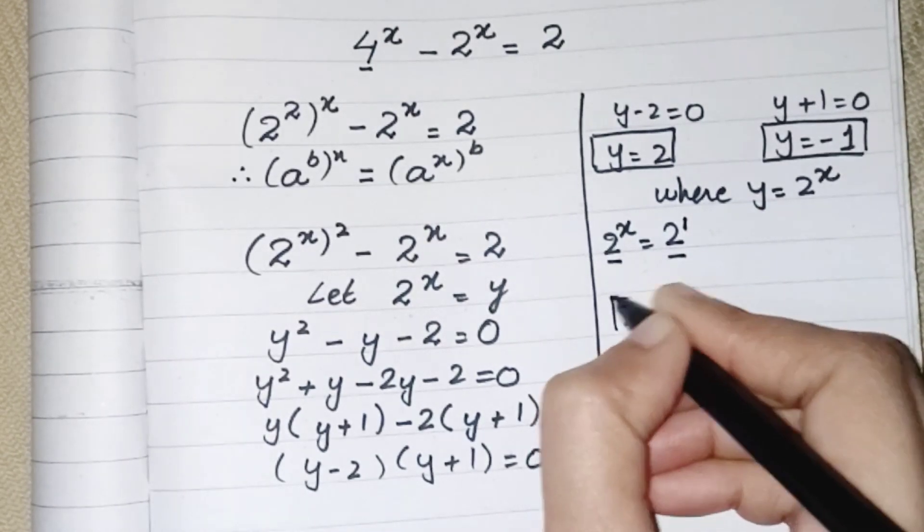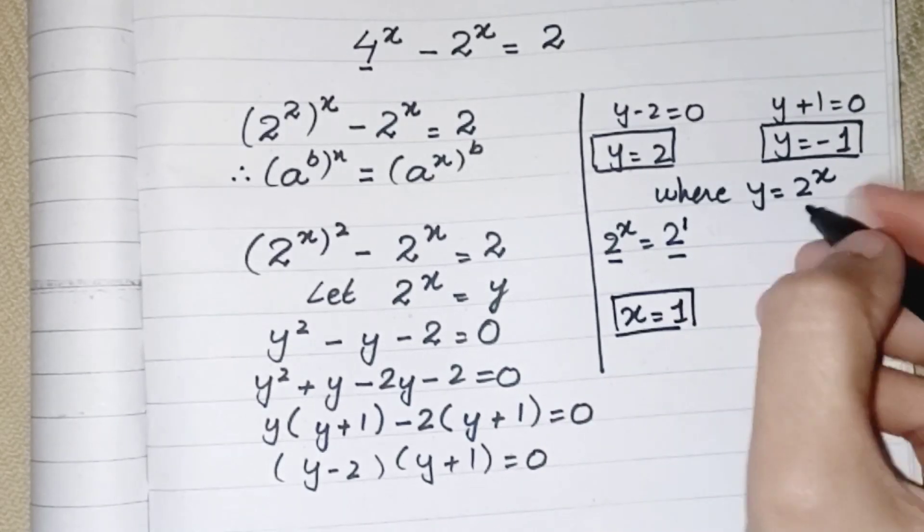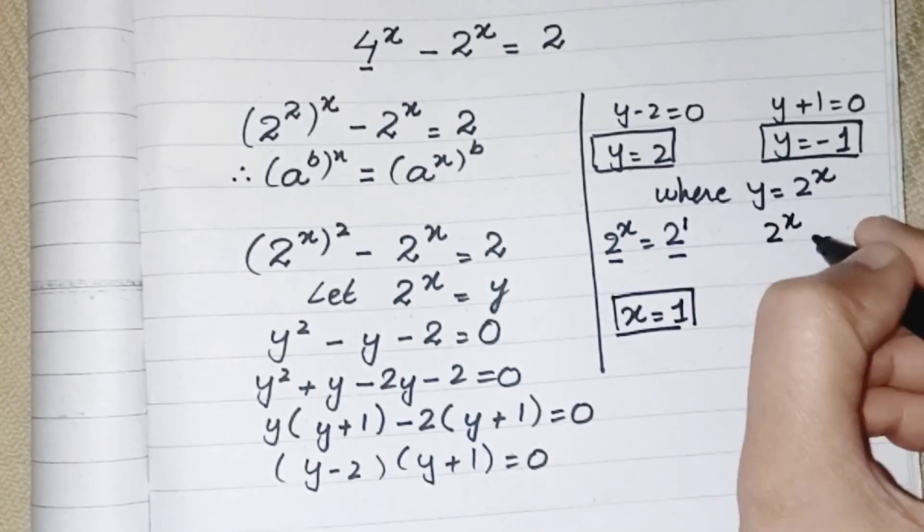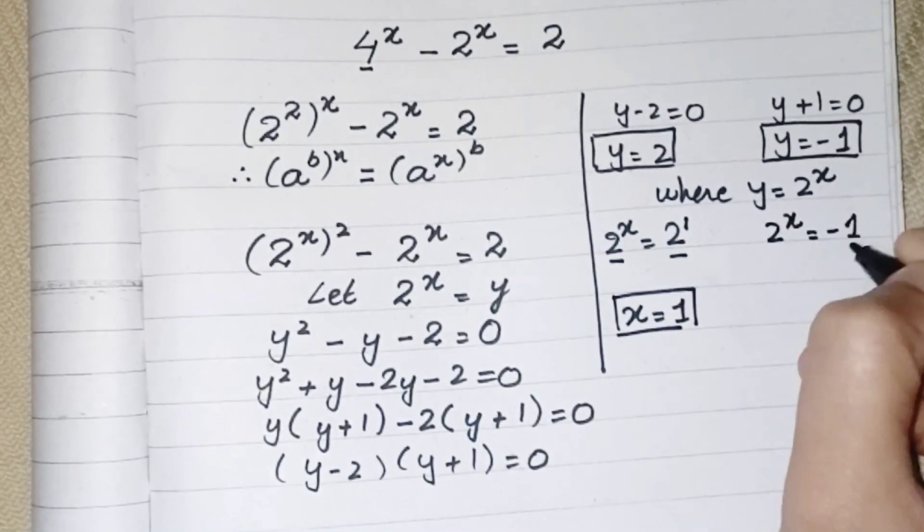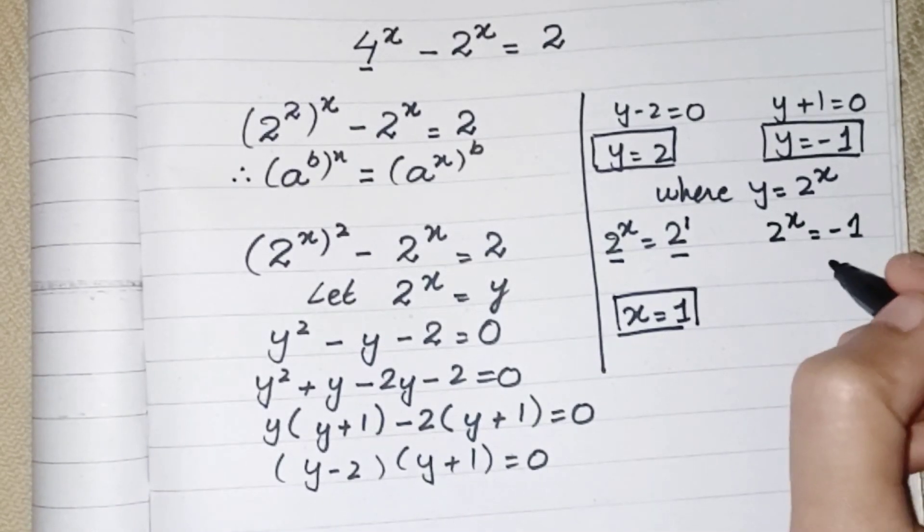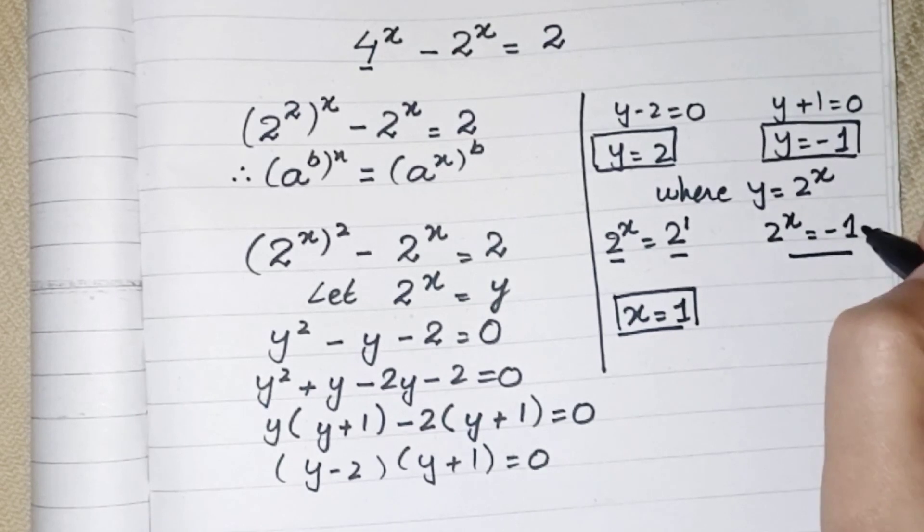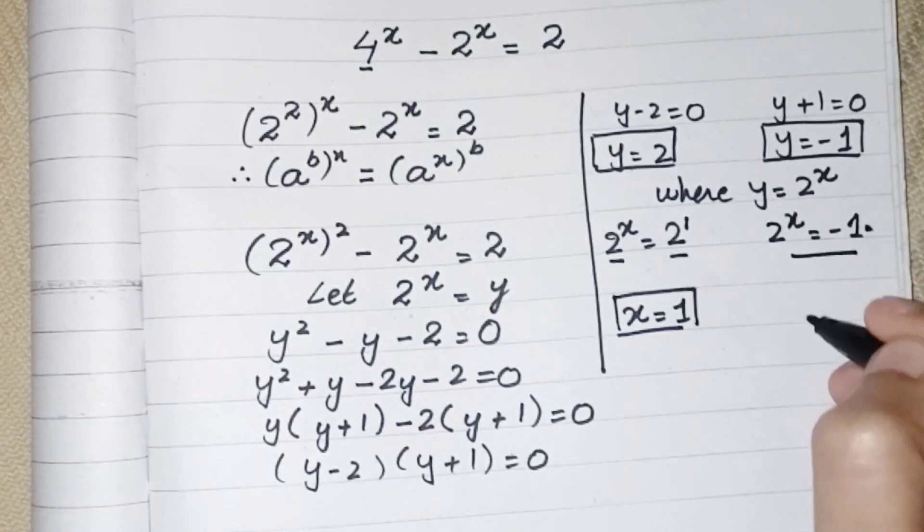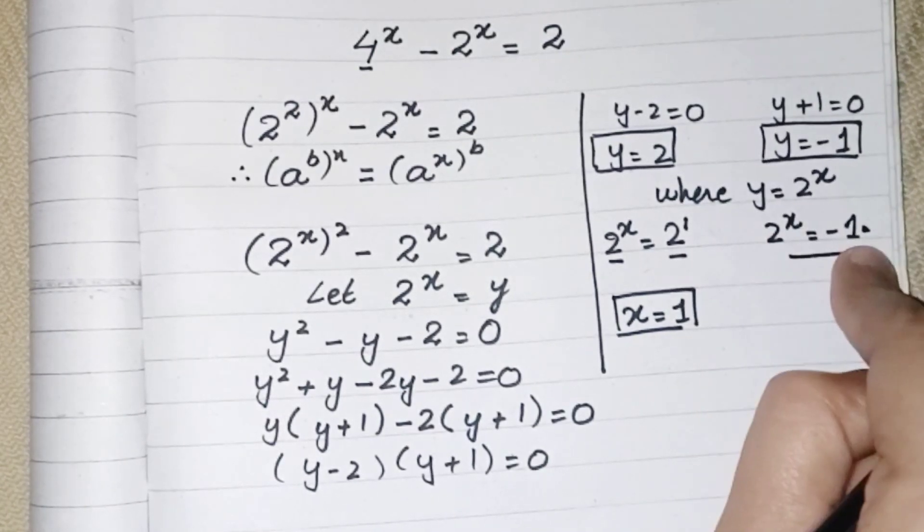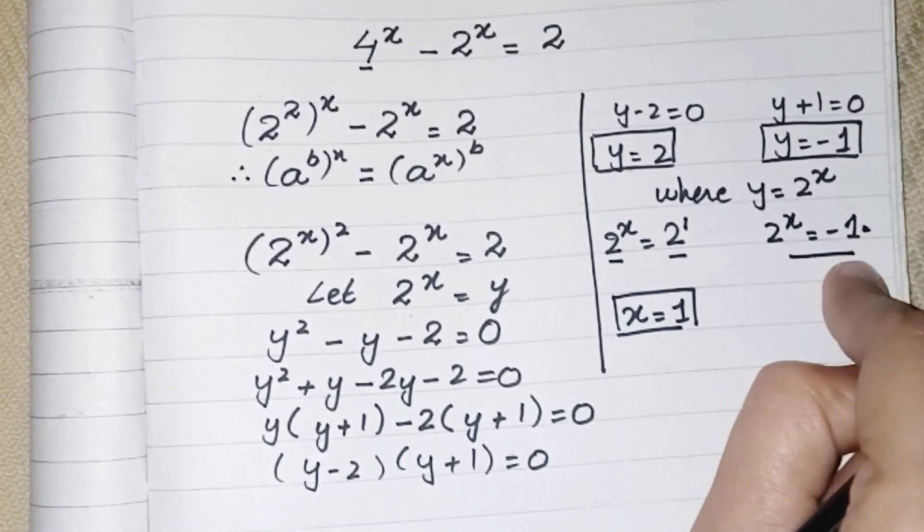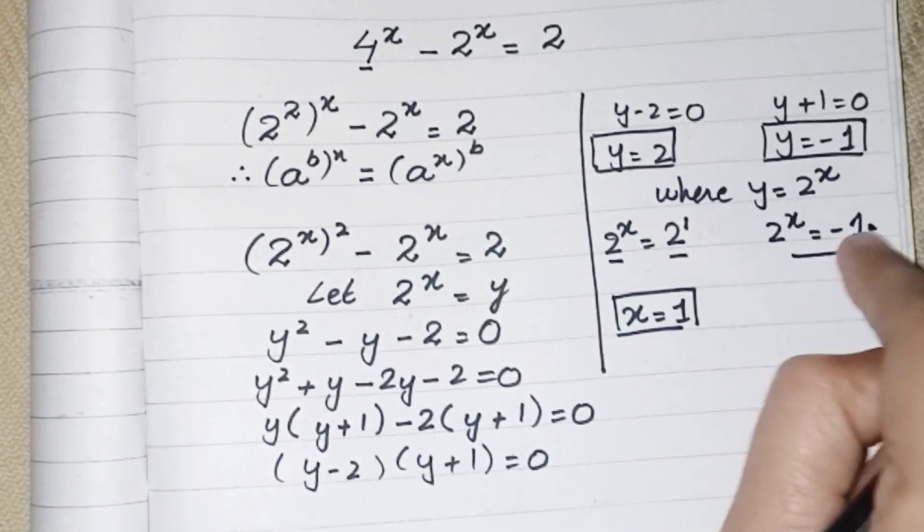On the other hand, what we have: 2^x will be equivalent to minus 1. So we cannot get the value of x from this one because we have minus 1 on that side. We cannot get the value as we have different basis and we cannot find the natural log with the negative sign.